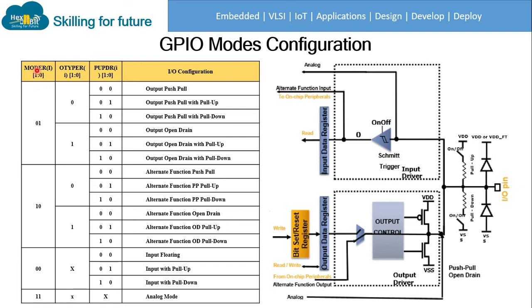The mode register uses two bits per pin, so a single pin can act in four different modes. Mode 0-1 configures the pin as output; mode 1-0 sets it as alternate function; mode 0-0 configures it as input; and mode 1-1 configures it as analog mode. For output type, 0 is push-pull and 1 is open drain. For pull-up pull-down, 0-0 means no pull-up or pull-down; 0-1 means pull-up; 1-0 means pull-down; and 1-1 has no defined state.